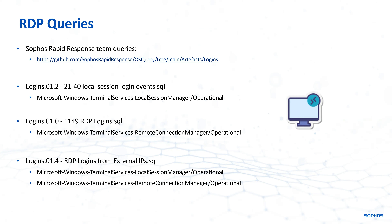We also subsequently use the 1149 RDP logons query, which looks in the terminal services remote connection manager operational log, specifically for event ID 1149 as the name suggests, in order to pull out those successful RDP connections.